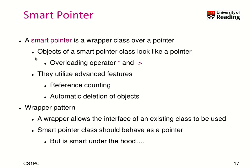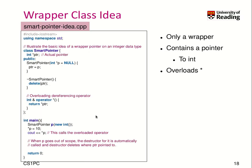A smart pointer in a more specific definition is a wrapper class over a pointer. Objects of a smart pointer look like a pointer and behave like a pointer by overloading operators star and arrow, but at the same time they utilize advanced features for reference counting and automatic deletion of objects. This is the wrapper pattern — a wrapper allows the interface of an existing class to be used, so smart pointers behave as a pointer but are smart under the hood.